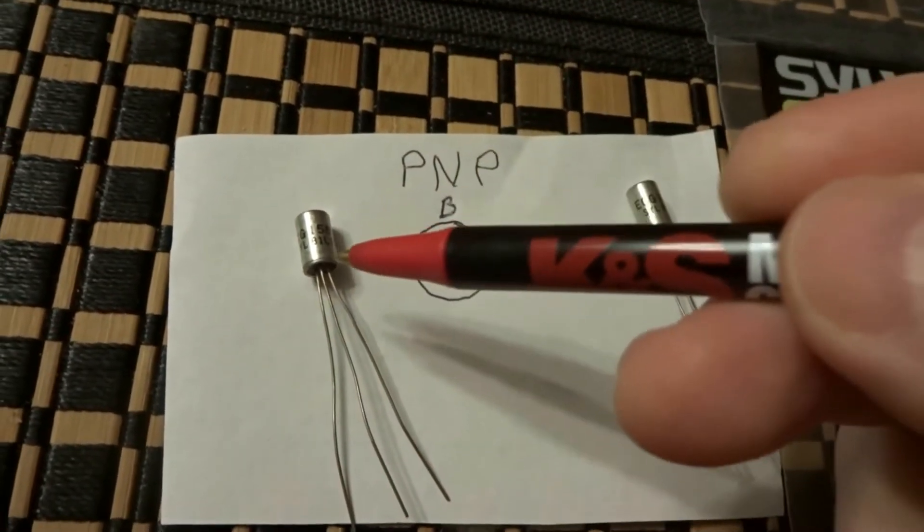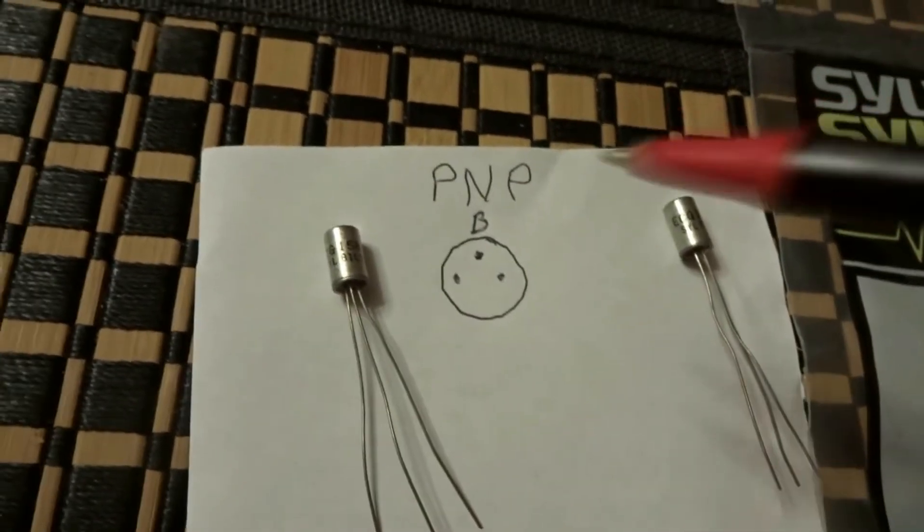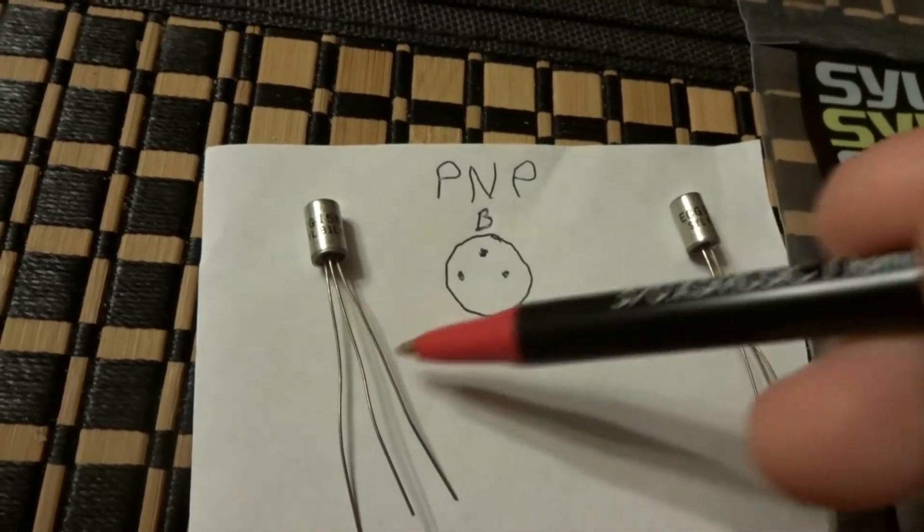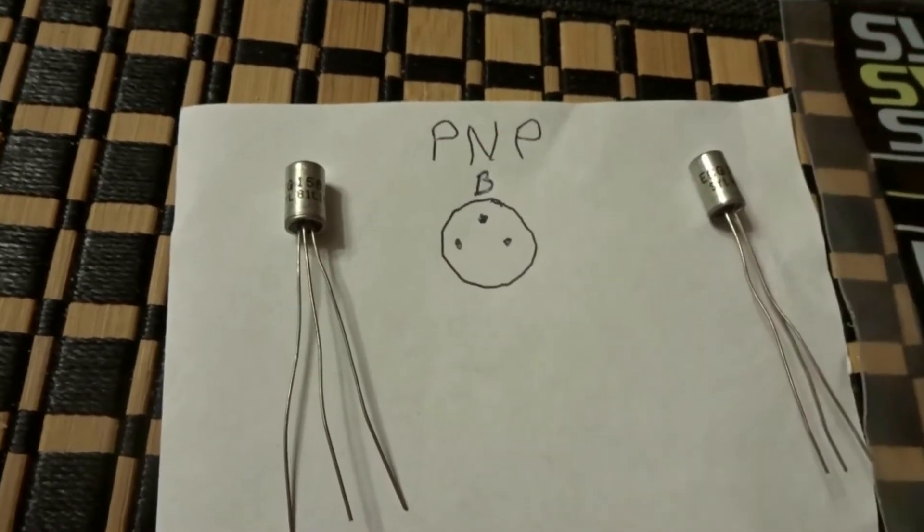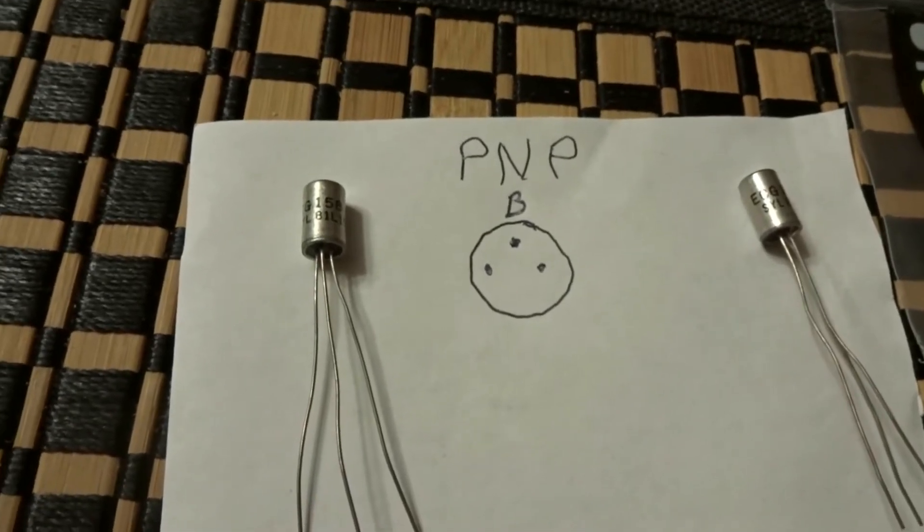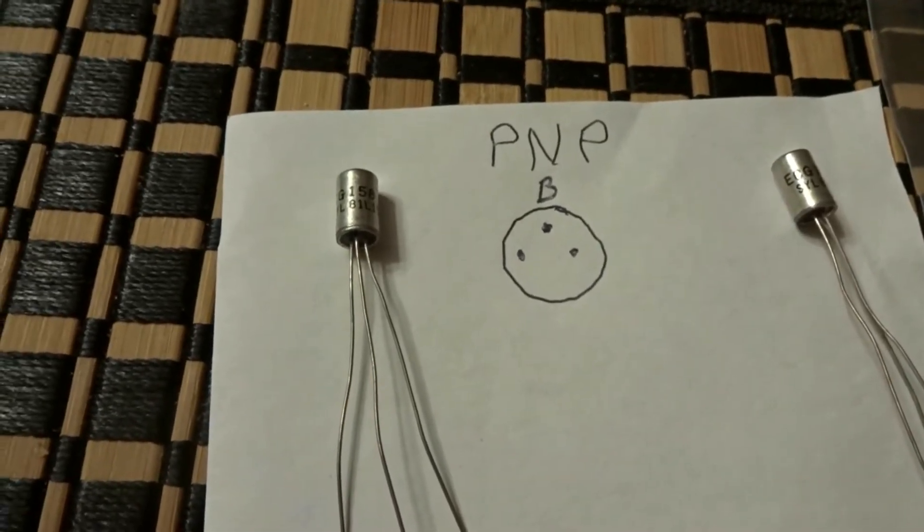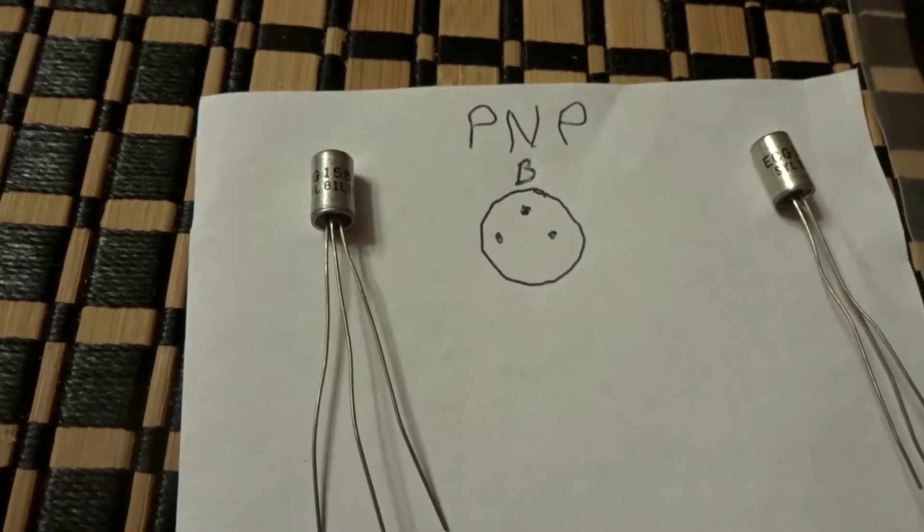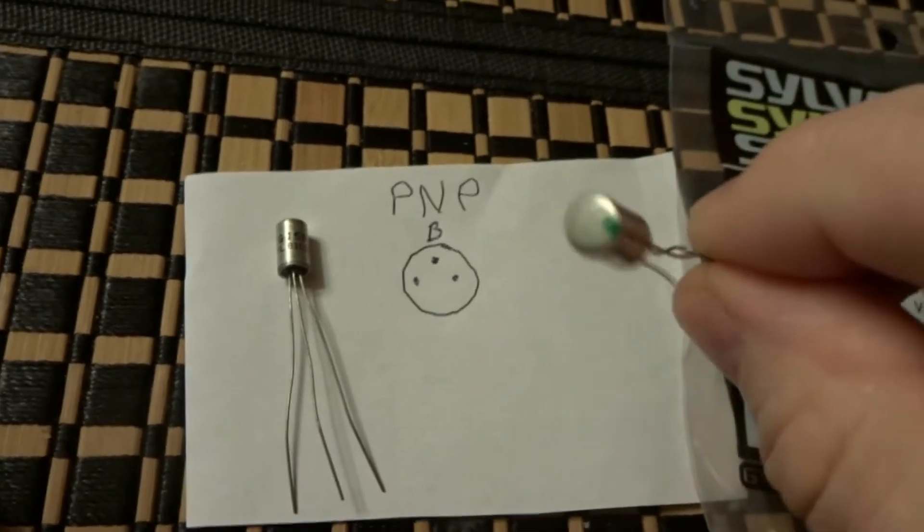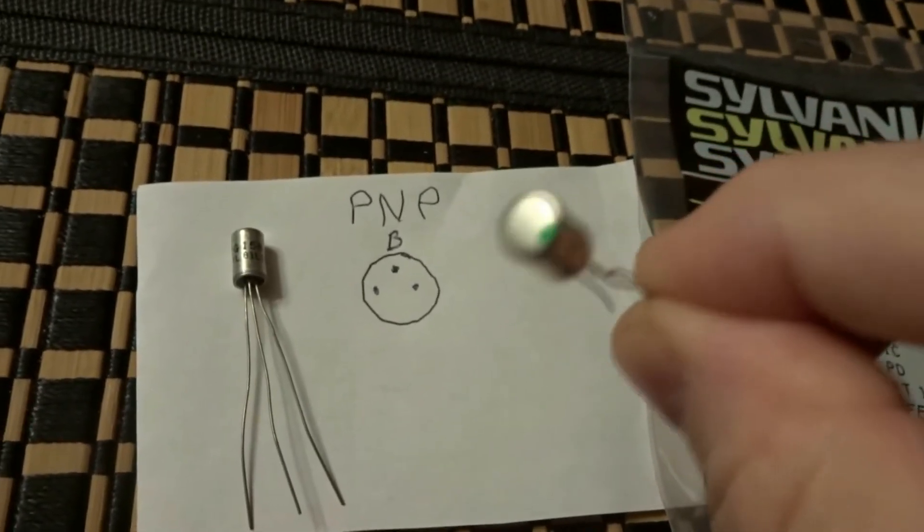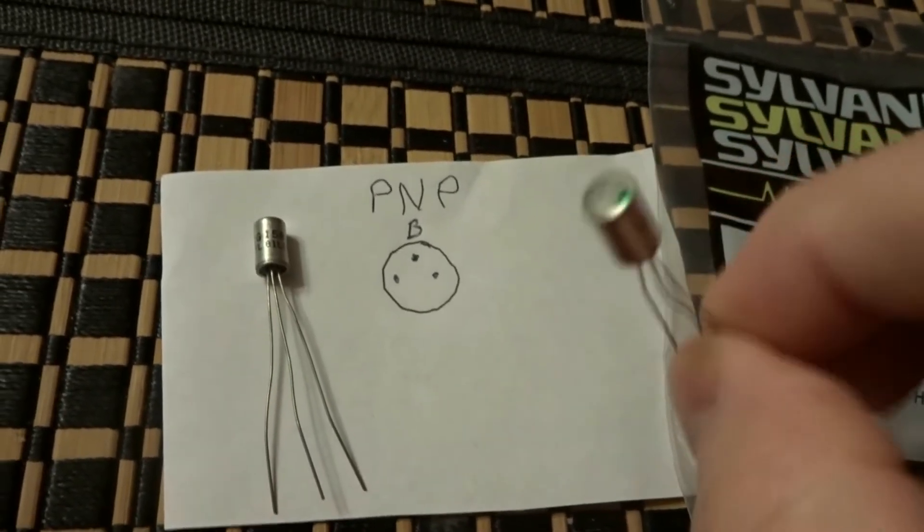There's some ones out there that have a little red dot and a little white dot, and there's some people saying that indicates the collector. But that's not always the case, as we'll see here. This green dot is indicating emitter. Being it's PNP and the middle leg right here is the base, we're gonna take our multimeter.